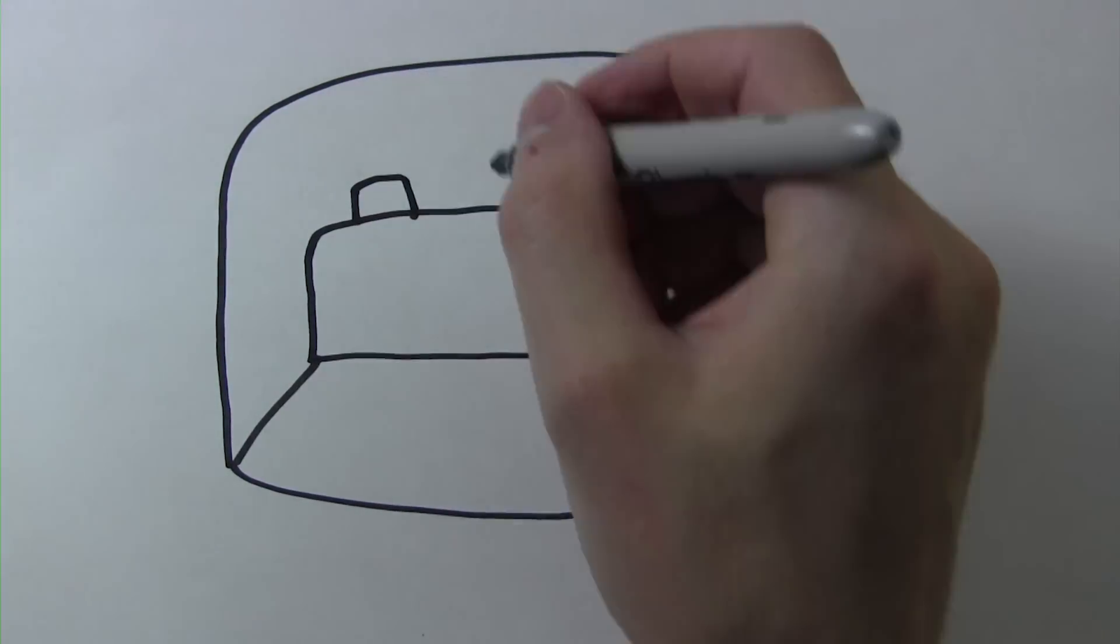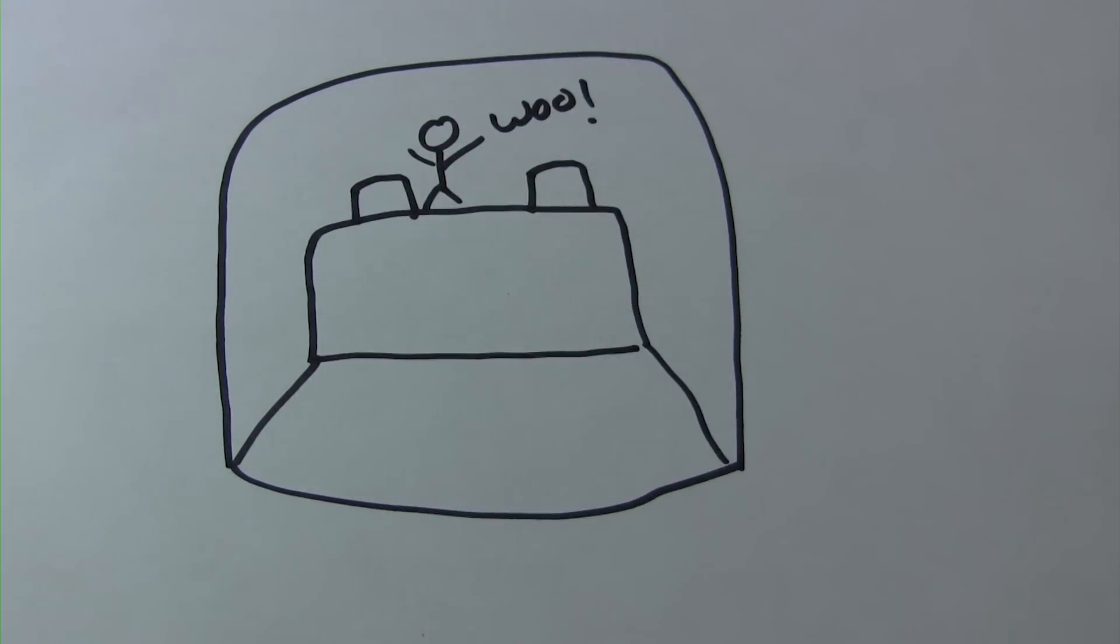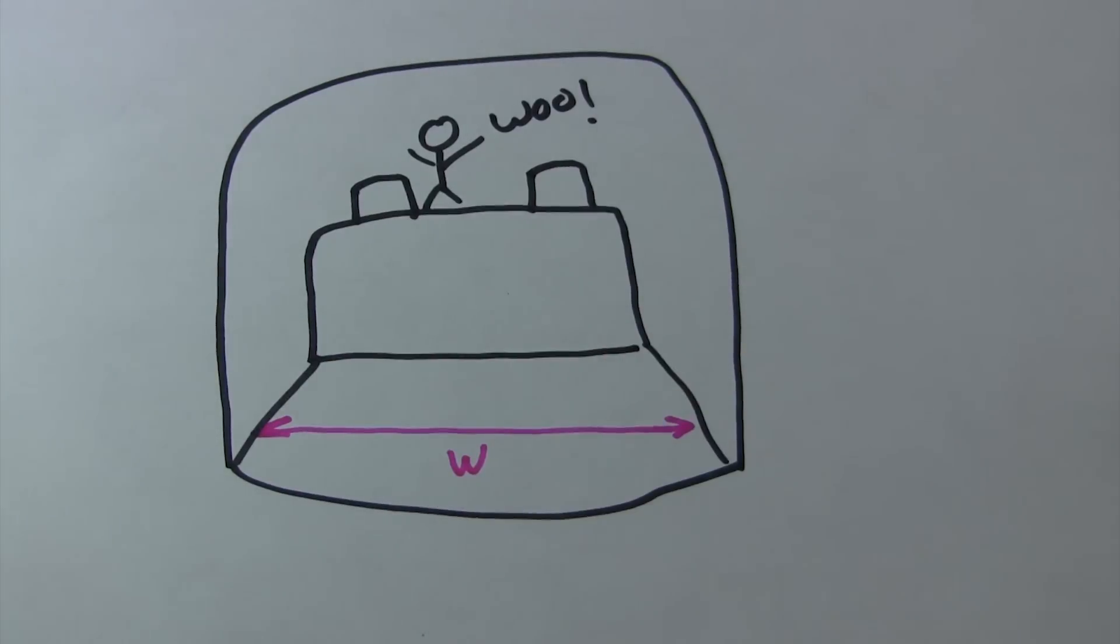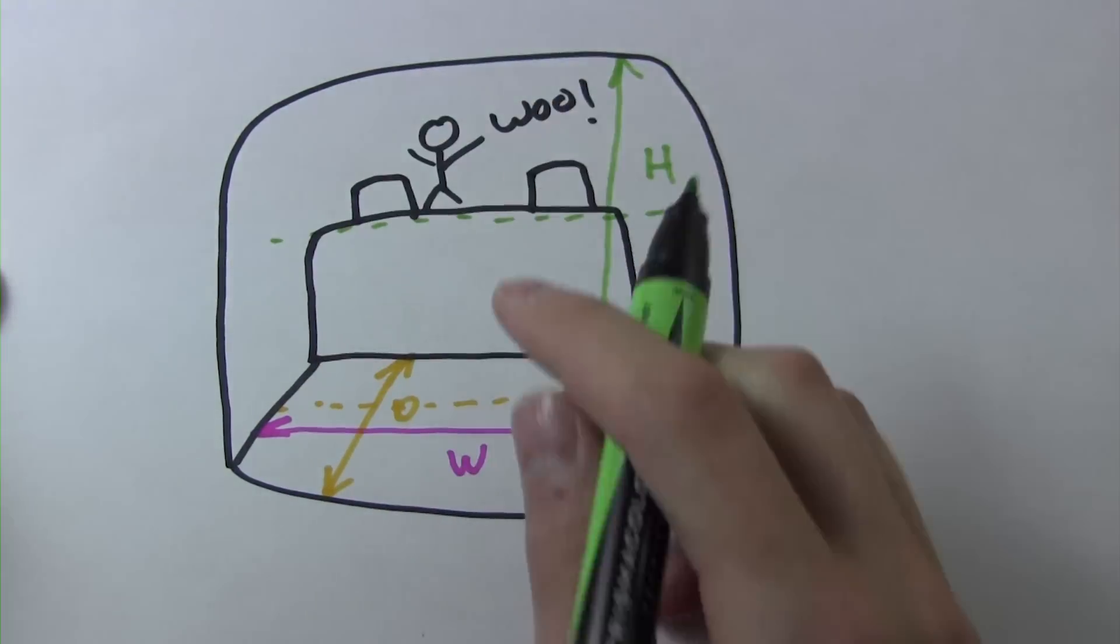With this understanding of volume, we can see how it applies to car audio. When we are measuring for a car audio enclosure, we want to measure our width, our depth, and our height within the vehicle.